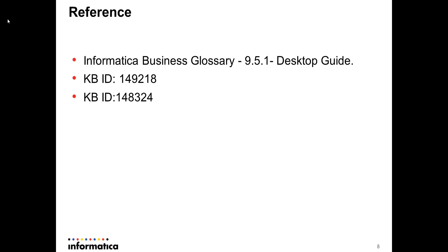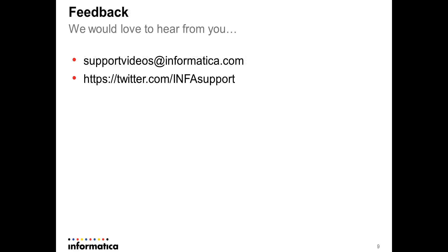In a nutshell, Informatica Business Glossary Desktop is a very easy and handy software to use. You don't have to depend on any browser — you can just launch it from your desktop, ensure you have connectivity to your host on that particular port, and it's pretty easy to use. For more information, you can refer to the Informatica Business Glossary Desktop guide, or have a look at our KBIDs 149218 and 148324. If you have any feedback, you can write to us through Twitter or email at the address provided. Thank you.